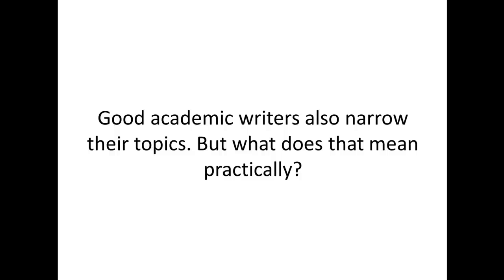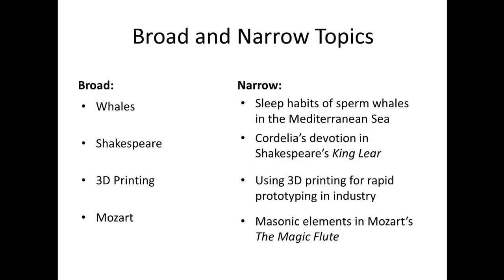Good academic writers also narrow their topics, but what does that mean practically? Let's look at broad and narrow topics. The broad topic is 'whales' and the narrow topic is 'sleep habits of sperm whales in the Mediterranean Sea.' 'Shakespeare' becomes 'Cordelia's devotion in Shakespeare's King Lear.' '3D printing' becomes 'using 3D printing for rapid prototyping in industry.' And the broad topic of 'Mozart' becomes 'Masonic elements in Mozart's Magic Flute.' You need to do some work before beginning to write, narrowing the topic. Whales is too broad for a research paper; we have to get as narrow as possible so that we can fully argue the point and support it with research.